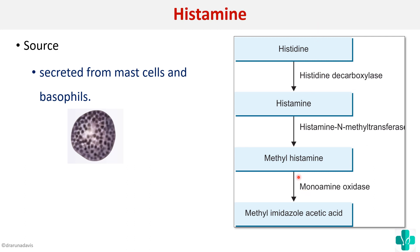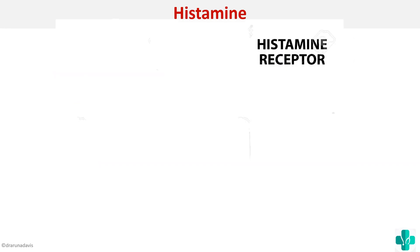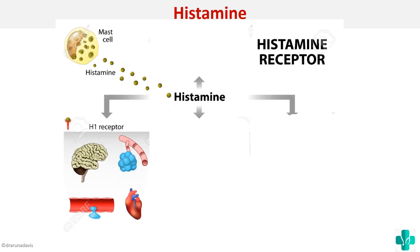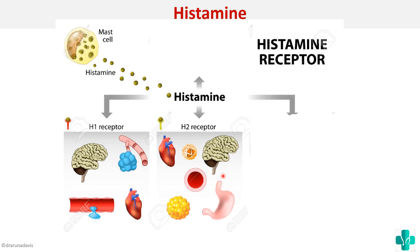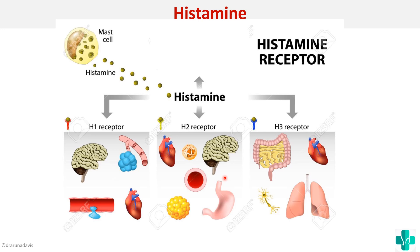Next, we'll see the histamine receptors, because depending on the receptor, the mechanism of action of histamine will vary. H1 receptors are found more in the CNS, lungs, heart, and blood vessels. H2 receptors are mainly seen in the stomach, lung alveoli, heart, and CNS. H3 receptors are seen in the large intestine, heart, lungs, and neurons. Some books also mention H4 receptors, mainly seen in the thyroid, intestine, and blood.